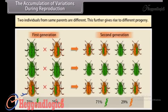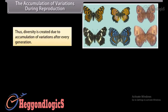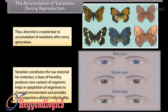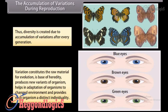Two individuals from the same parents are different, which further gives rise to different progeny. Thus, diversity is created due to accumulation of variations after every generation. Variation constitutes the raw material for evolution — it is the basis of heredity, produces new variants of organisms, helps in adaptation to changed environments, and provides each organism a distinct individuality.